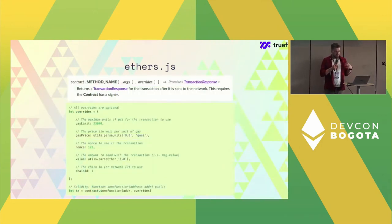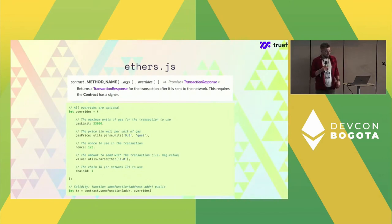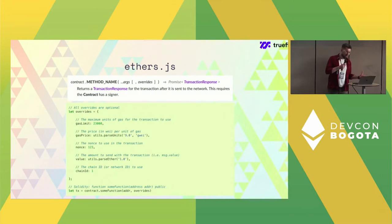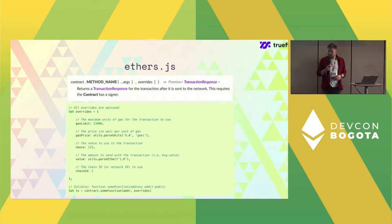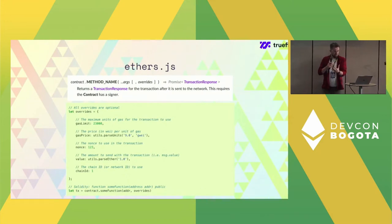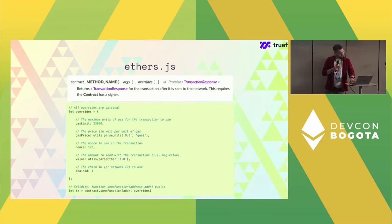Ethers.js also helps you override additional properties of transactions — not only constructing basic transactions but also overriding gas limit, nonce value, chain ID, and more. Once you construct the transaction, you can add all these overrides and perform a very custom transaction.